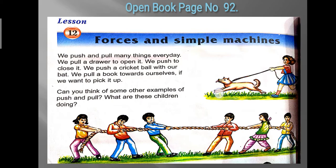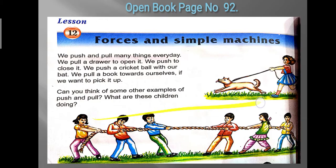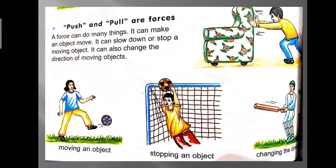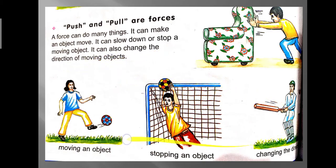These two actions — push and pull — are the forms of force you are applying. Simply, a push and a pull are forces. A force can do many things: it makes an object move, it can slow down or stop a moving object, and it can also change the direction of the object.